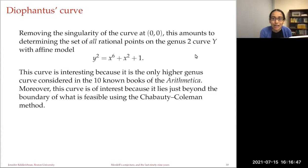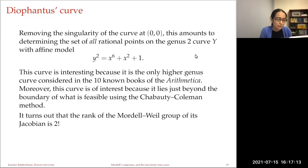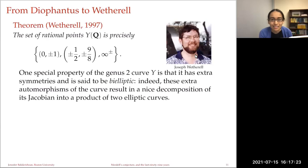This curve turns out to be a little bit difficult to apply Chabauty-Coleman to directly. Chabauty-Coleman for a genus two curve requires that the rank of the Jacobian be less than two, but the rank of the Mordell-Weil group of the Jacobian is two — just a little bit too big. Nevertheless, Joe Wetherell in his 1997 PhD thesis showed that one can determine the set of rational points on this genus two curve.